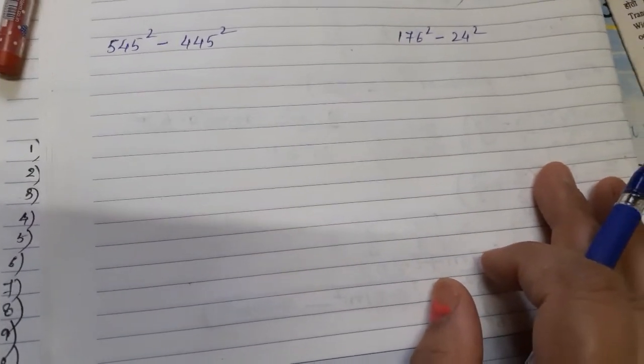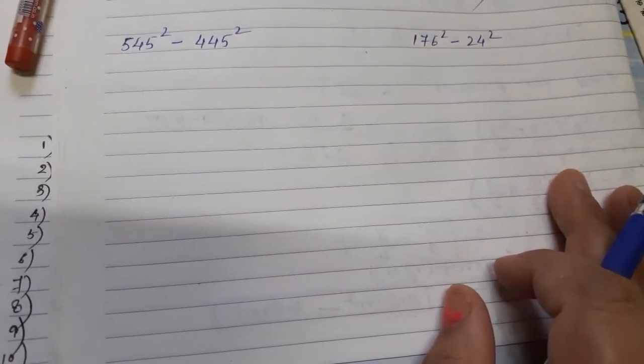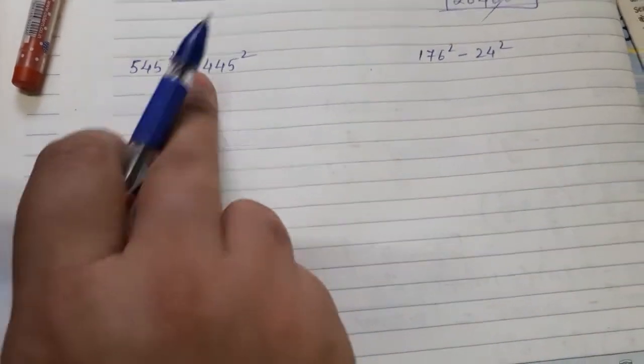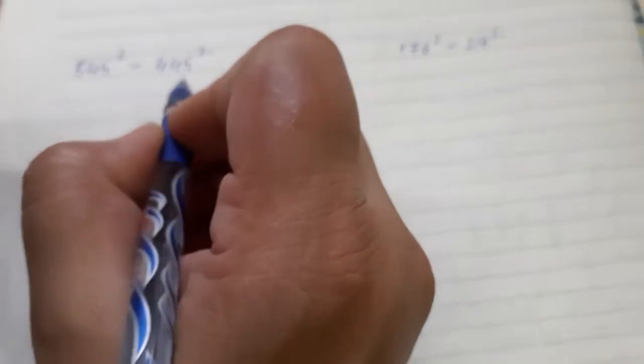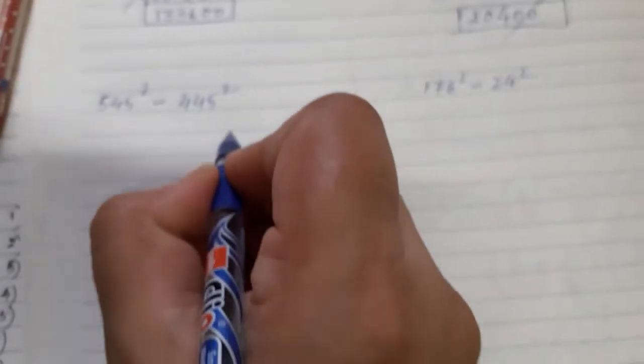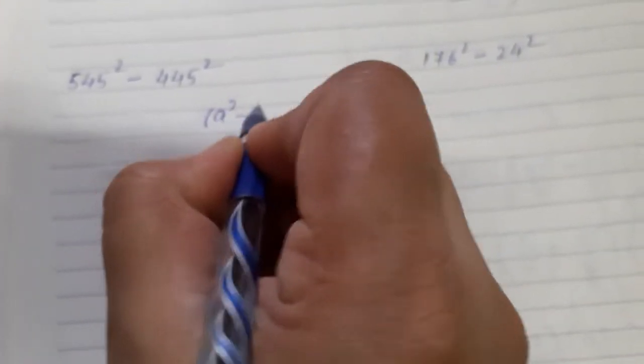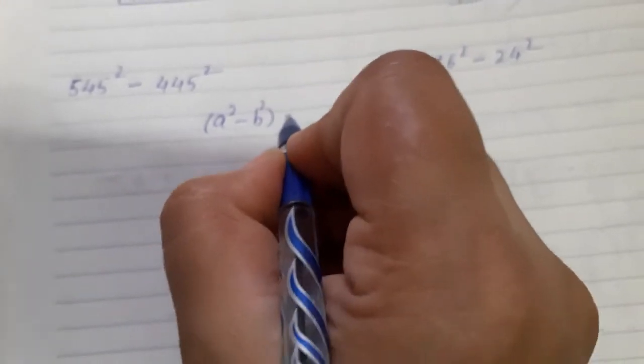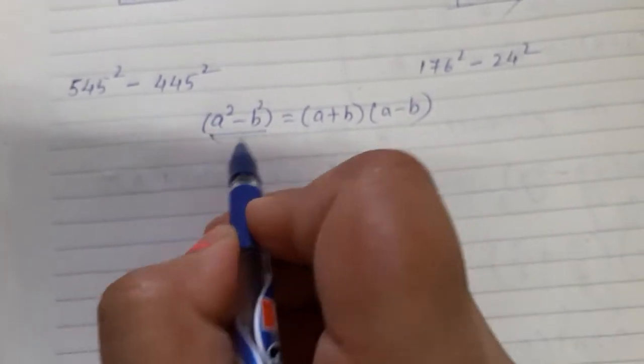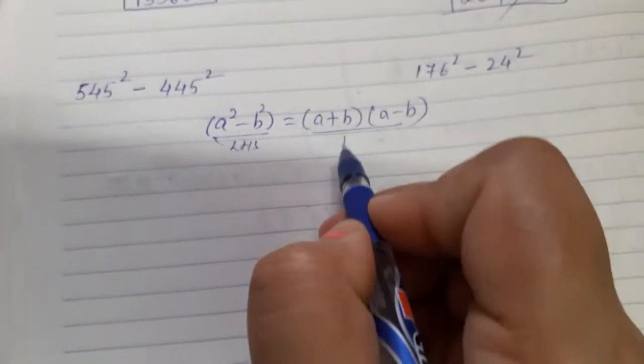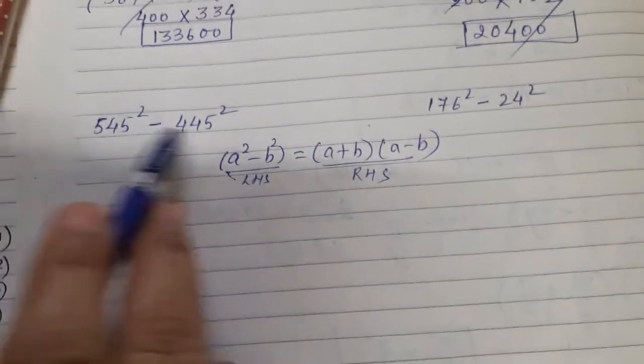Hello students, in this video I am going to evaluate these questions with the help of the third algebraic identity. The third identity is a² - b² = (a + b)(a - b). This is the LHS and this is the RHS. The questions are given in the form of LHS.